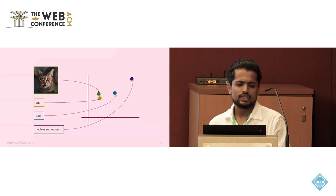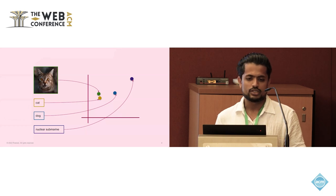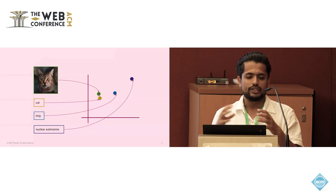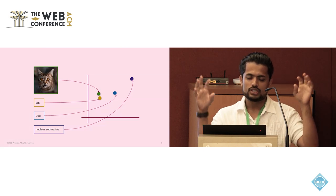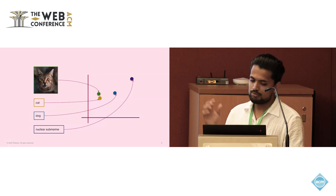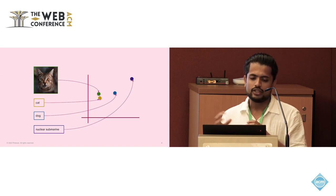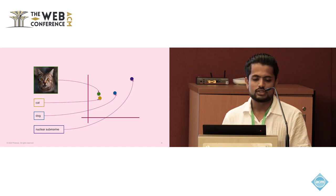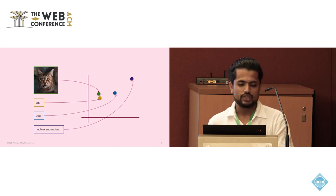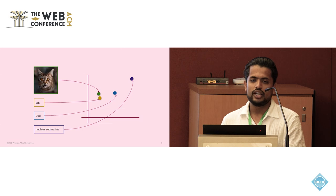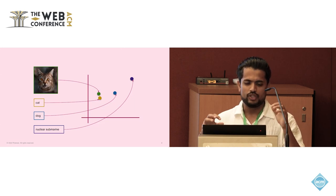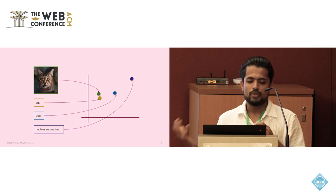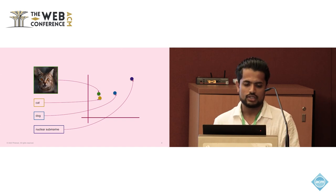Embeddings are useful building blocks in any recommendation system. The goal of an embedding model is to map related pins and queries to similar positions in embedding space. For example, the embedding for the query "cat" should be close to the embedding for a pin of a cat, but much further for an unrelated query like "nuclear submarine." Meanwhile, for a related query like "dog," the embedding should fall somewhere in between. This kind of semantic structure in the embedding space gives embeddings great power for various downstream applications in the recommendation stack.